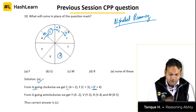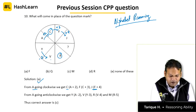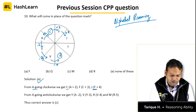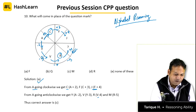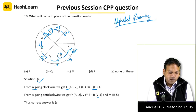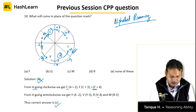Going anti-clockwise from A: A minus 2 is Y, Y minus 3 is V, V minus 4 is R, and from R when we go minus 5 we get M. So M should come in the blank. From A going clockwise: plus 2, plus 3, plus 4; and from A going anti-clockwise: minus 2, minus 3, minus 4, minus 5 — giving us M. That is why the correct answer for this question is C, that is M.